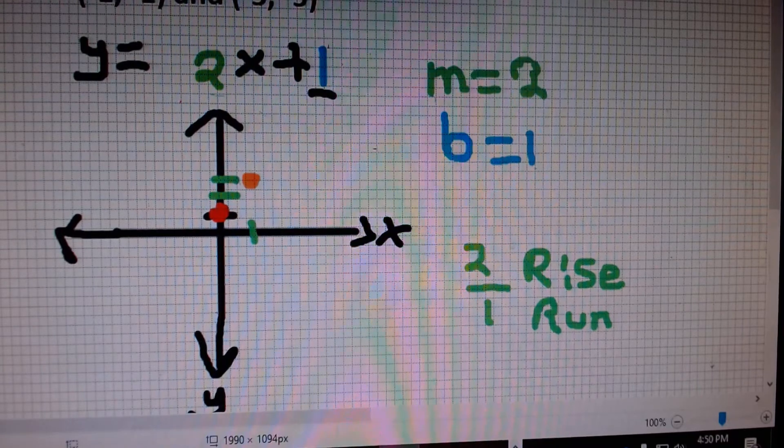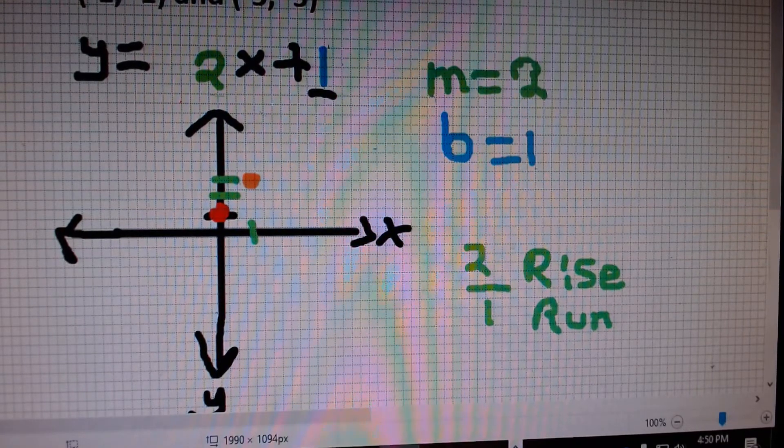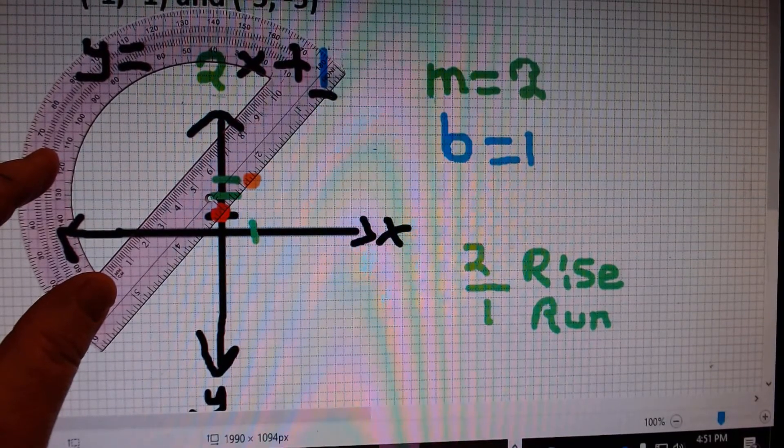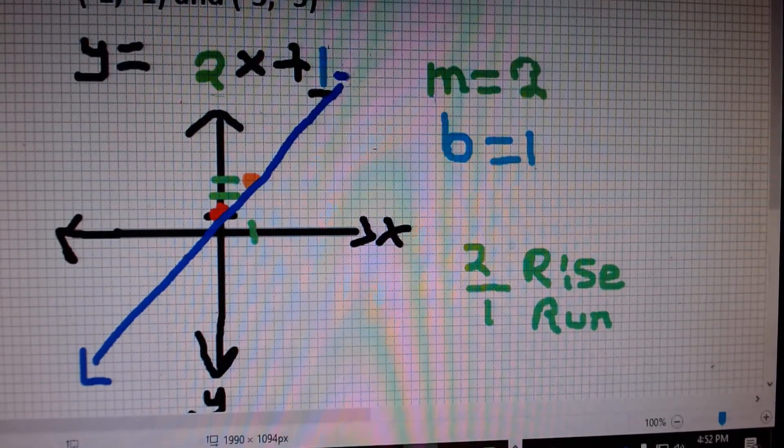Then, with a straight edge or a protractor or a ruler, draw a straight line through the two points. I'll line the two points up with a protractor and draw a straight line. Now, this line represents y equals 2x plus 1.